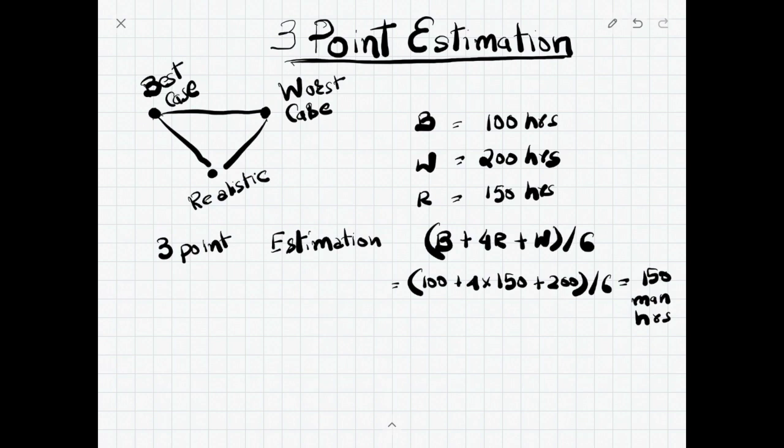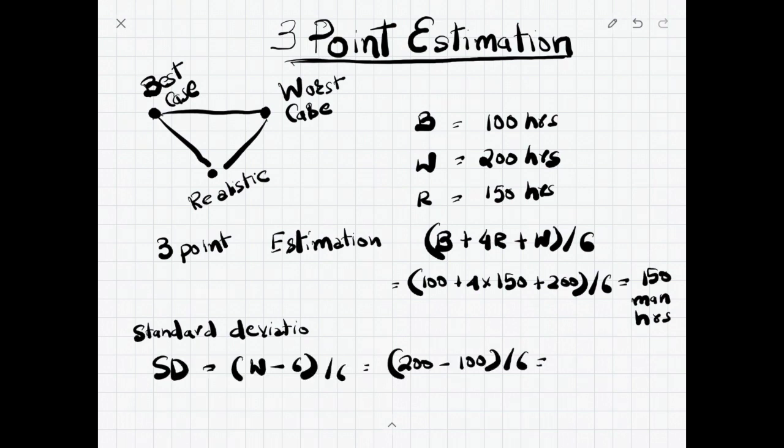So there is a formula for finding the standard deviation. What is the error plus minus? Most of the time some assignments may take 20% more or less. The formula to come up with this standard deviation is you take the worst number minus the best, divide by 6. In our case, 200 minus 100 divided by 6 is 16.7 man hours. So this is the error margin plus minus.